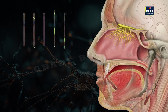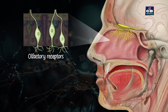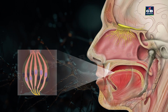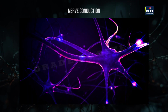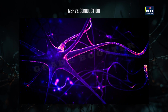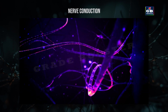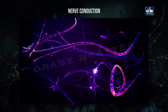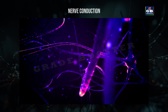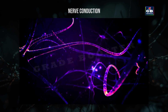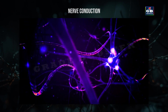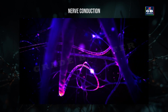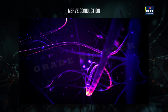There are different types of receptors. Olfactory receptors in the nose detect smell; gustatory receptors in the tongue detect taste. Neurons carry information to different parts of the nervous system — this is called nerve conduction. Dendrites receive nerve signals and pass them to the next neuron through nerve endings.